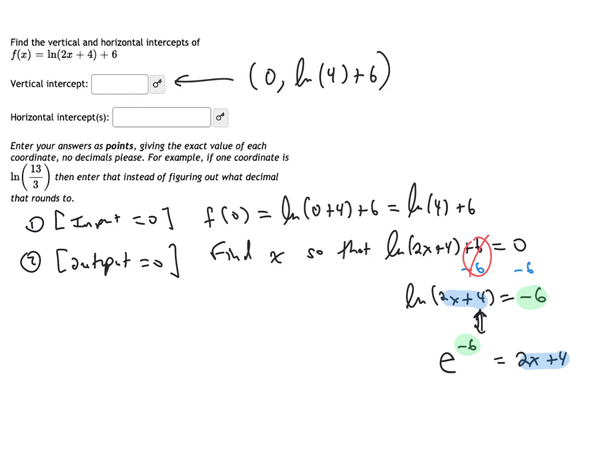I need to subtract four from both sides. So then we'll have e to the minus six minus four is two x, and if I can just continue here going right to left, I would now just divide both sides by two. So I would say that's one-half e to the minus six minus four is equal to x. So that's going to be my exact answer for x.